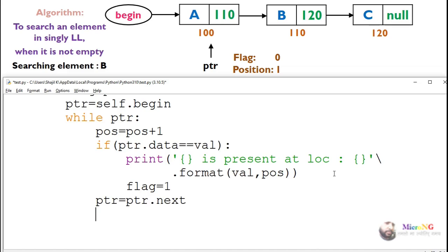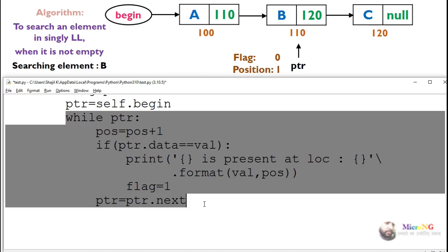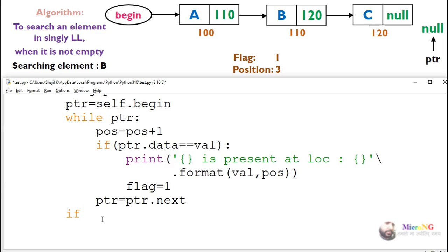In the first case the data is not present at node A, so the loop keeps repeating and the pointer goes to the next node. Now at the second node, position is increased to 2. Here PTR.data is B and we are searching for B — it's a match, so it displays the data is present and makes flag as 1. After that, the pointer goes to the next node, position is increased again, but the data is not the same. The pointer then goes to null, and once it reaches null, we stop the while loop.